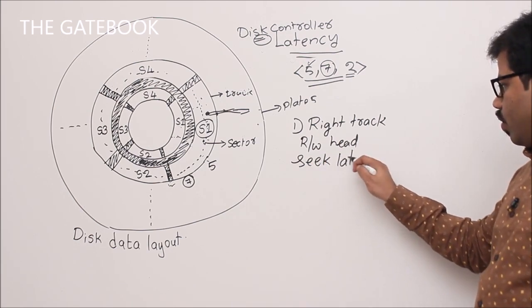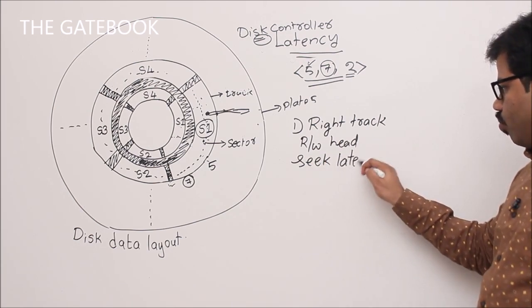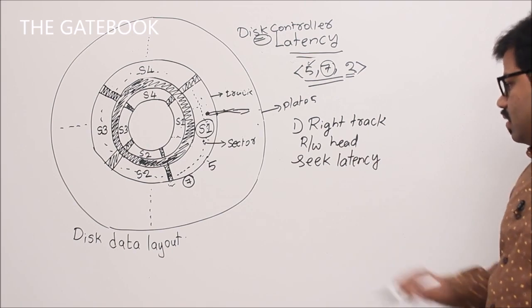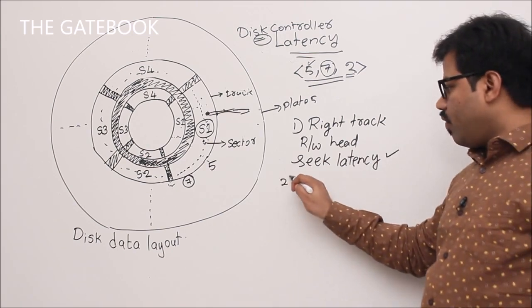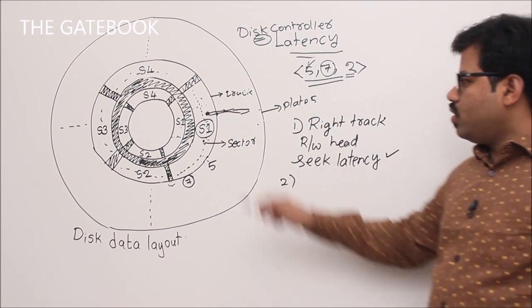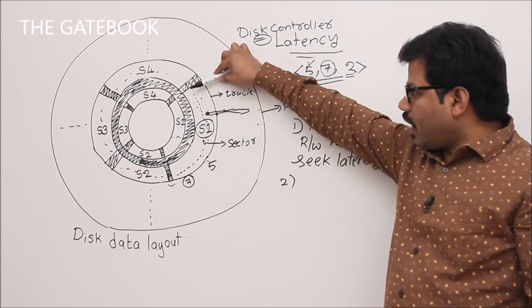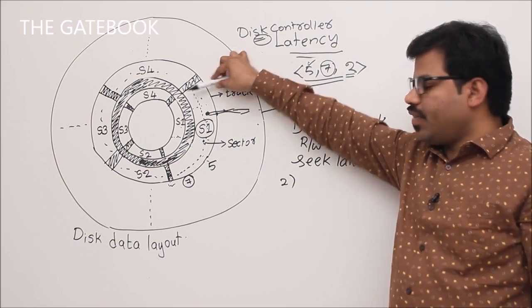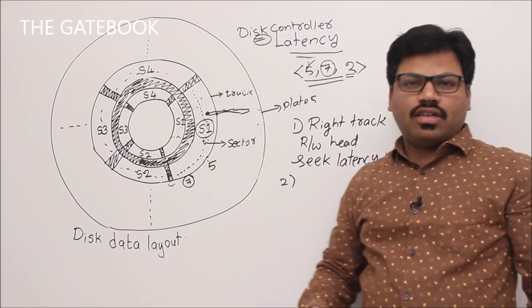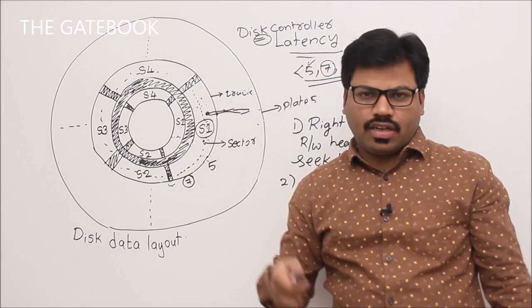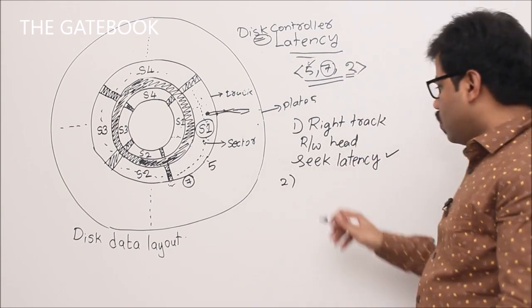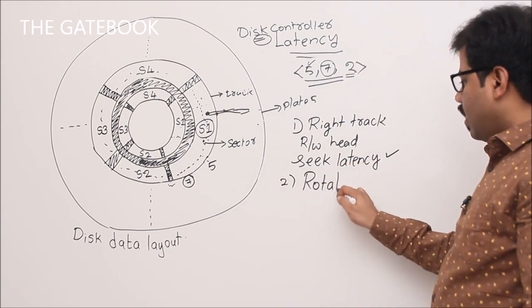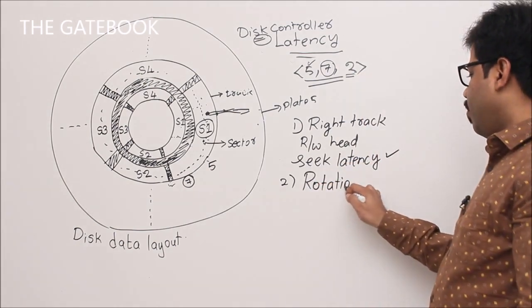So writing to disk involves two steps: first, moving the read/write head to the right track — the time taken for this is called seek latency. Then, rotating the plate so the right sector comes under the head — this is called rotational latency.